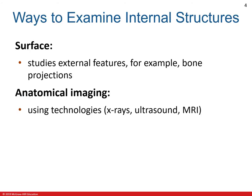Those interested in studying body structures have two general ways to examine the internal structures of a living person. Surface anatomy is the study of external features, such as bony projections, which serve as landmarks for locating deeper structures. Anatomical imaging involves the use of x-rays, ultrasound, magnetic resonance imaging (MRI), and other technologies to create pictures of internal structures, such as when determining if a bone is broken or a ligament is torn. Both provide important information for diagnosing diseases.